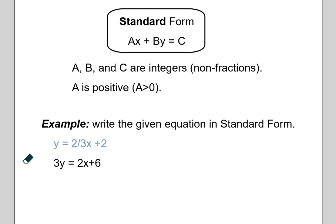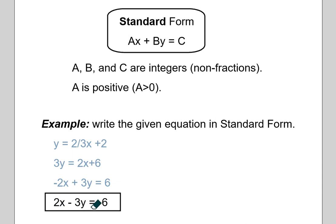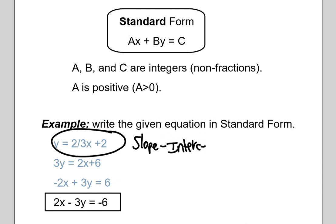Now that we've gotten rid of all fractions, we just want to bring all the X and Y terms together on one side of the equation. So we subtract 2X from both sides to get negative 2X plus 3Y equals 6.